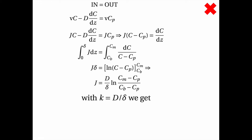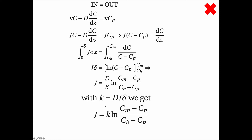Now, what do we do with diffusivity divided by film thickness? Diffusivity has units of square meters per second, and film thickness has units of meters, so dividing gives meters per second. This is actually a mass transfer coefficient — the two-film theory states that the mass transfer coefficient equals diffusivity divided by film thickness. So we get the concentration polarization equation.